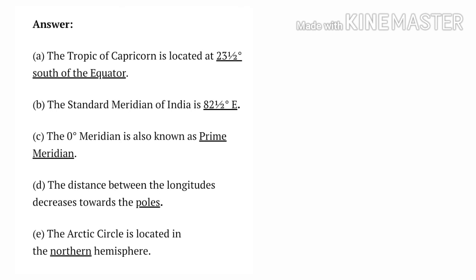Fill in the blanks: A. The Tropic of Capricorn is located at 23 and a half degrees south of the equator. B. The Standard Meridian of India is 82 and a half degrees east. C. The zero degree meridian is also known as Prime Meridian. D. The distance between the longitudes decreases towards the poles. E. The Arctic Circle is located in the northern hemisphere. This is the end of this video. In the next video we will continue the next chapter.